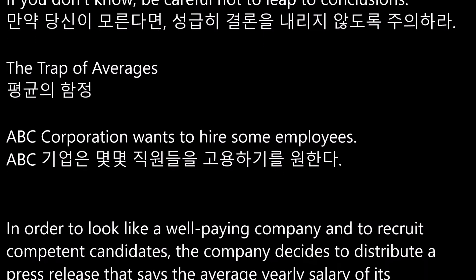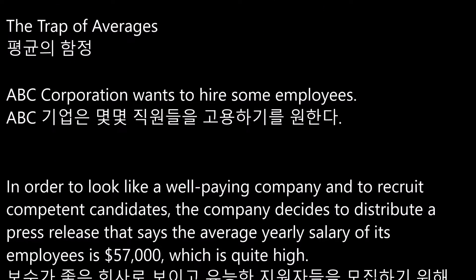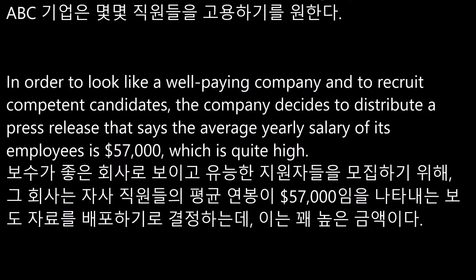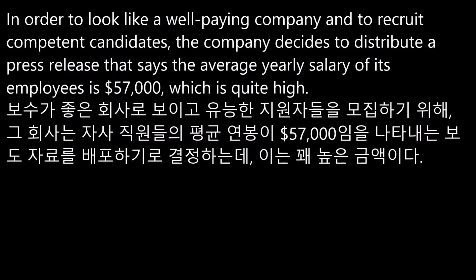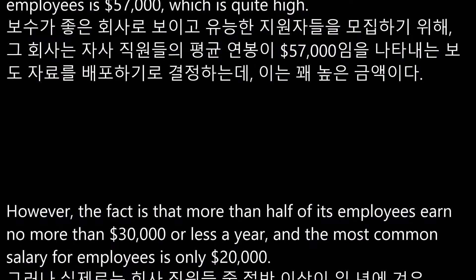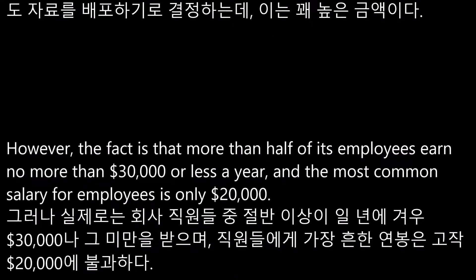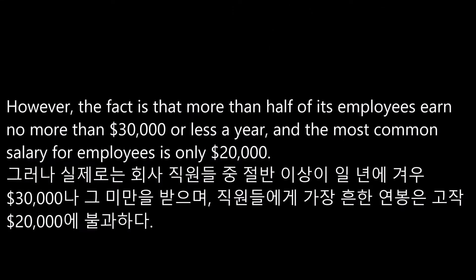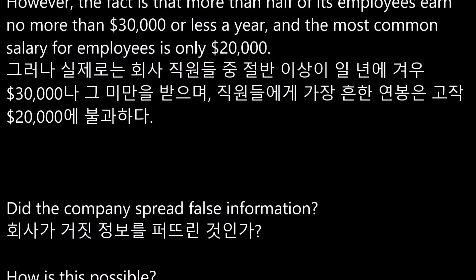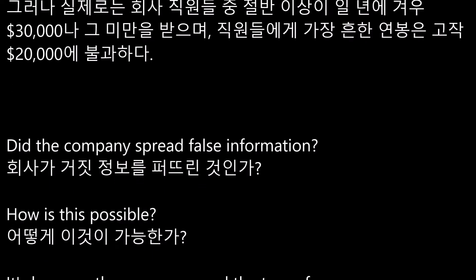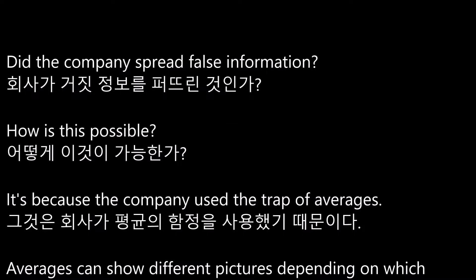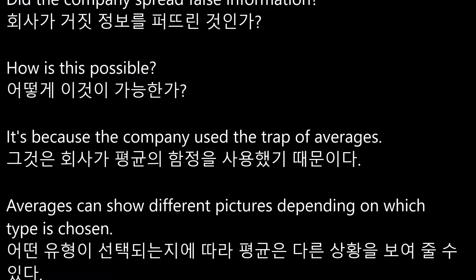The Trap of Averages. ABC Corporation wants to hire some employees. In order to look like a well-paying company and to recruit competent candidates, the company decides to distribute a press release saying the average yearly salary of its employees is $57,000, which is quite high. However, the fact is that more than half of its employees earn no more than $30,000 or less a year, and the most common salary for employees is only $20,000. Did the company spread false information? It's because the company used the trap of averages.